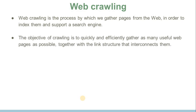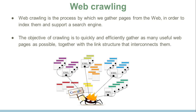The objective of crawling is to quickly and efficiently gather as many useful web pages as possible, together with the link structure that interconnects them. For example, here is an image of a spider, which is actually a kind of web crawler. If you want to see any results in Google, the crawler gathers those results. How does it gather them?